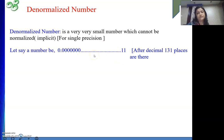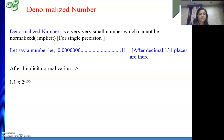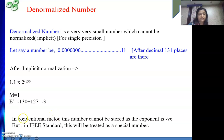Minus 130 plus 127 will be minus 3. But that I cannot represent. We know in IEEE my exponents are always positive because we are representing them using a biased exponent where my value of bias is 127. So in this example, after normalization we get 1.1 into 2 to the power minus 130, giving M = 1 and E' = minus 3. But minus 3 cannot be stored in IEEE as the exponent is negative.